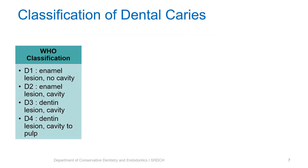Based upon WHO classification, caries is classified into D1, which is an enamel lesion where there is no cavitation and hence there is a possibility that it can be remineralized. D2 is again within the enamel but there is cavitation. D3 is a lesion extending to dentin with cavitation, and D4 is a dentinal lesion in close proximity to the pulp.